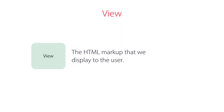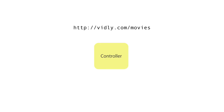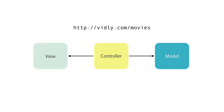V in MVC represents the View, which is the HTML markup that we display to the user. C is the Controller, which is responsible for handling an HTTP request. For example, imagine our application is hosted at vidly.com — when we send a request to vidly.com/movies, a controller will be selected to handle this request. This controller will get all the movies from the database, put them in a view, and return the view to the client or the browser.